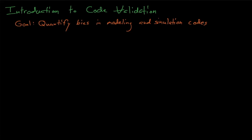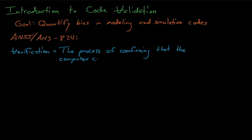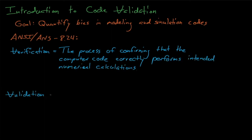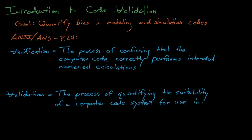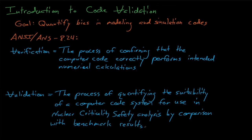The ANSI-ANS 824 standard defines verification as the process of confirming that the computer system correctly performs intended numerical calculations, while validation is the process of quantifying, or in other words, establishing the appropriate bias and bias uncertainty.